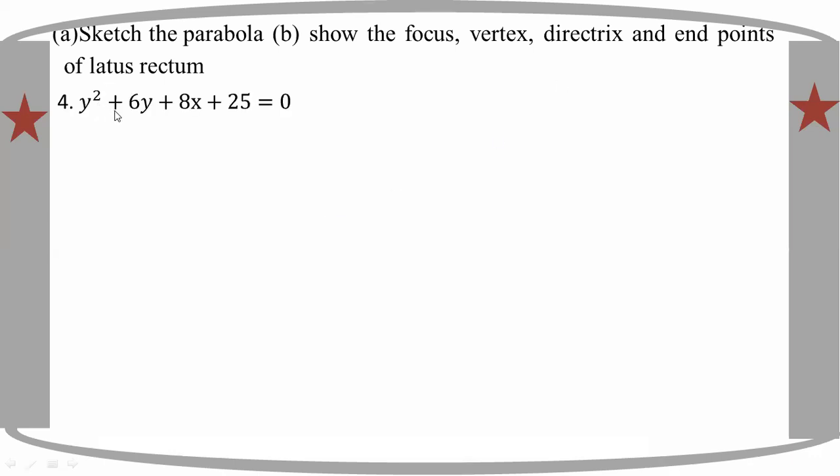y squared plus 6y plus 8x plus 25 equal to 0.